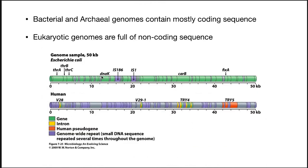Another important thing to understand about genomes is that bacterial and archaeal genomes contain mostly coding sequence — so coding sequence is at a premium. Eukaryotic genomes, by contrast, are full of non-coding sequences. In E. coli you can see nearly all regions are coding, whereas in a comparable human genome region of 50 kb there are lots of non-coding regions with only small slices of coding sequence.